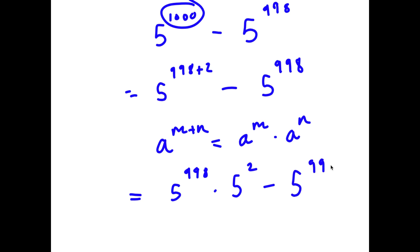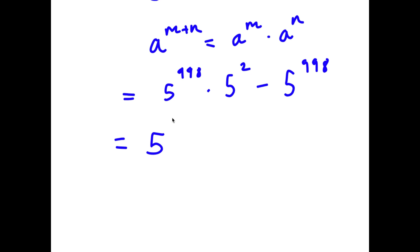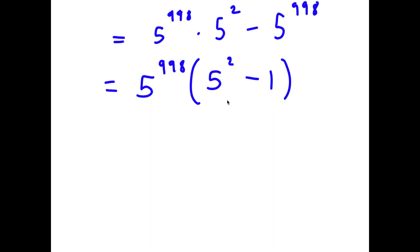So I have 5 to the power of 998 times 5 to the power of 2, minus 5 to the power of 998. I'm going to factor out 5 to the power of 998. That gives 5 to the power of 998 times 5 squared, divided by 5 to the power of 998 which is 5 squared, and negative 5 to the power of 998 divided by 5 to the power of 998 is negative 1.